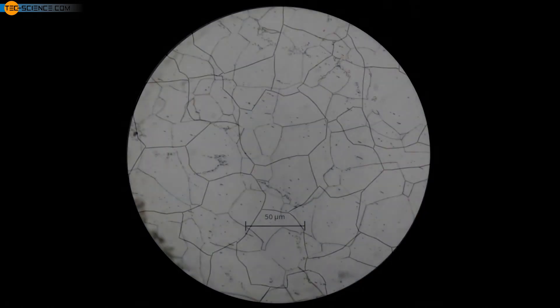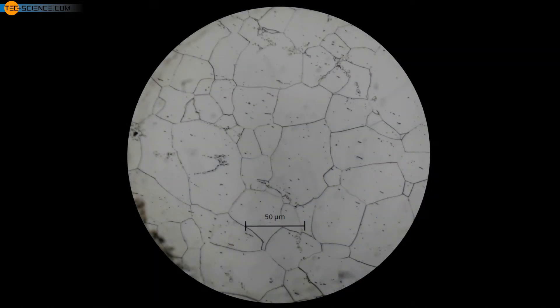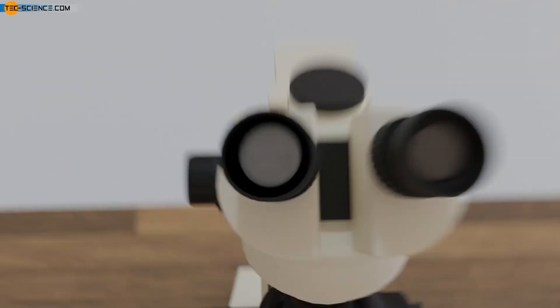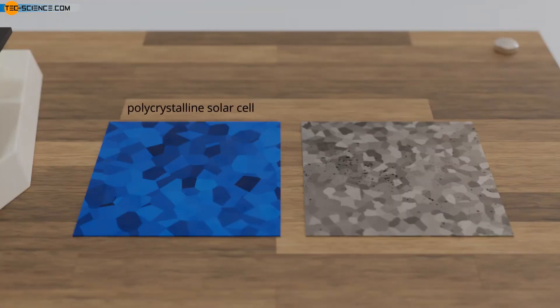Depending on the metal, the grains vary in size and range from a few micrometers to several centimeters. In polycrystalline solar cells or galvanized steel sheets, the individual grains are even visible to the naked eye. The different orientation of the lattice structure influences the reflection behavior and thus leads to the typical shimmering of the individual grains.